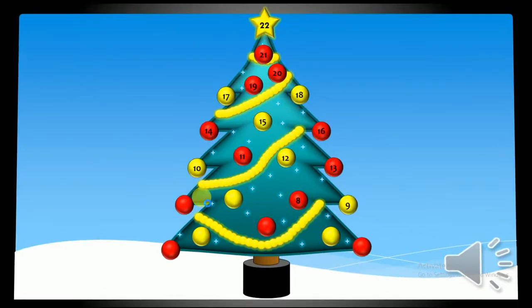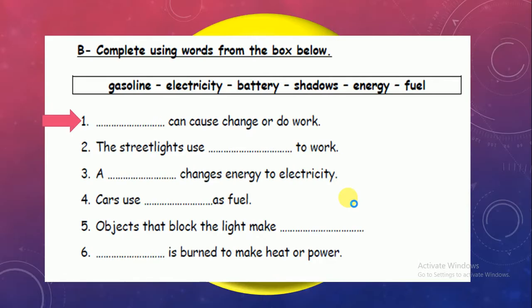So let's move to number 9. It's exercise B, complete using words from the box below. We have in the box gasoline, electricity, battery, shadows, energy, fuel. Okay, number 1, what can cause a change or do work? Energy, good job.